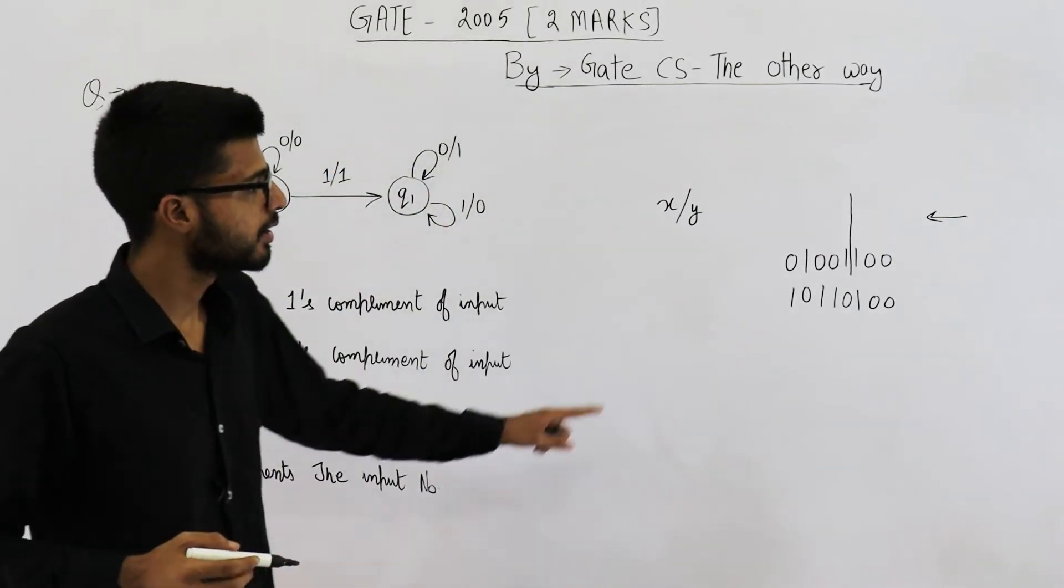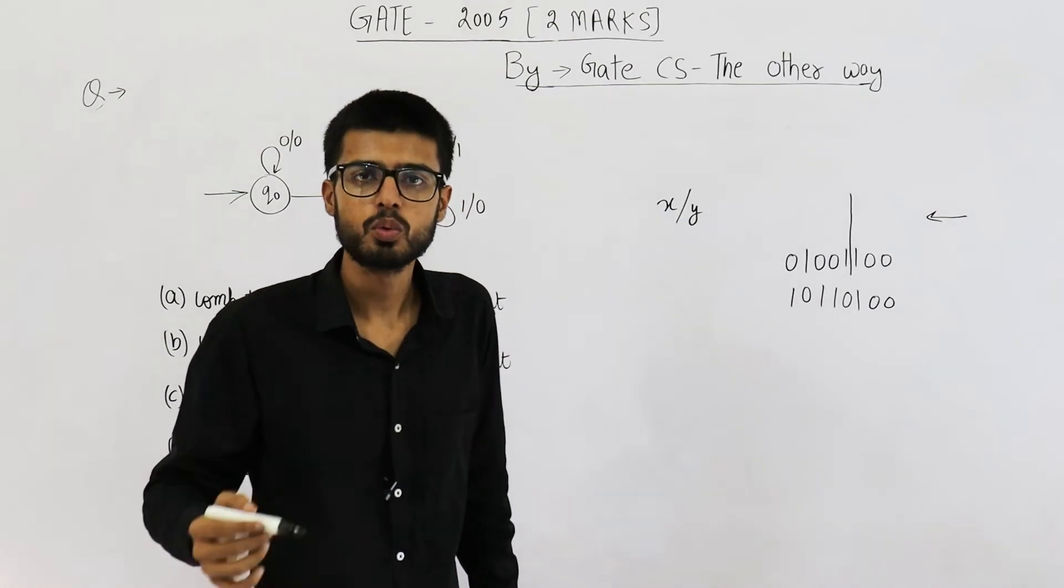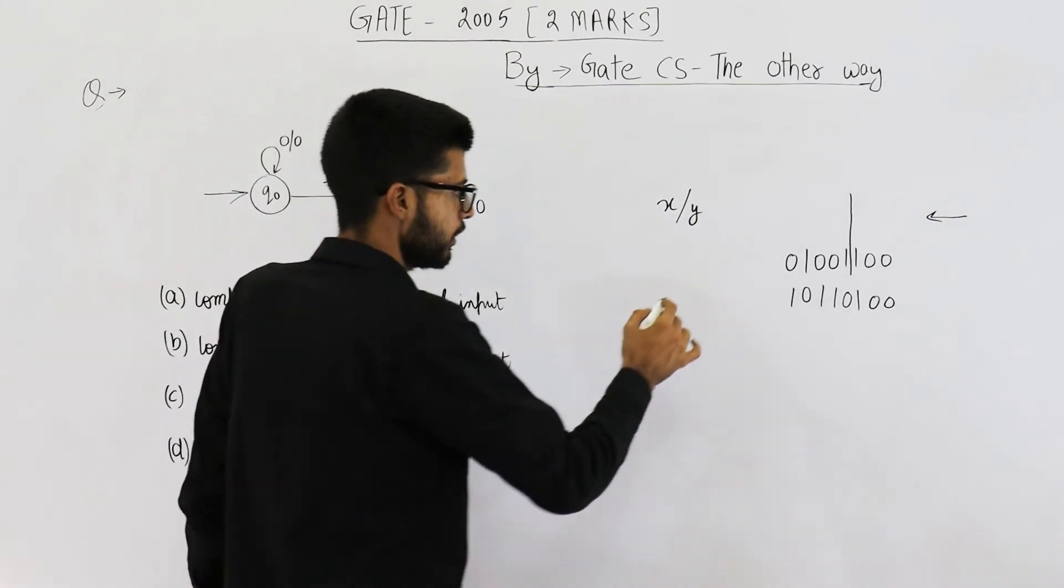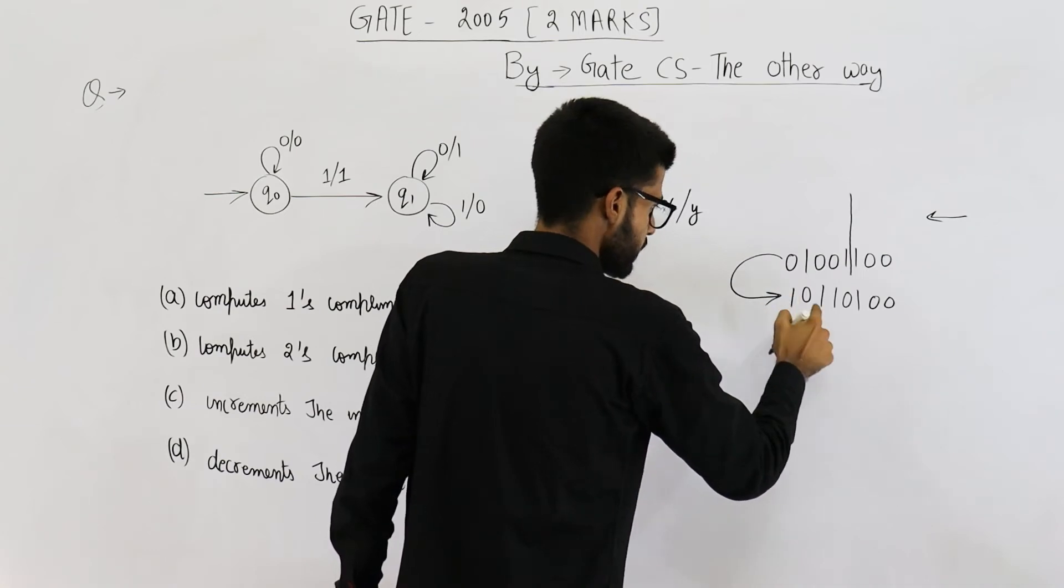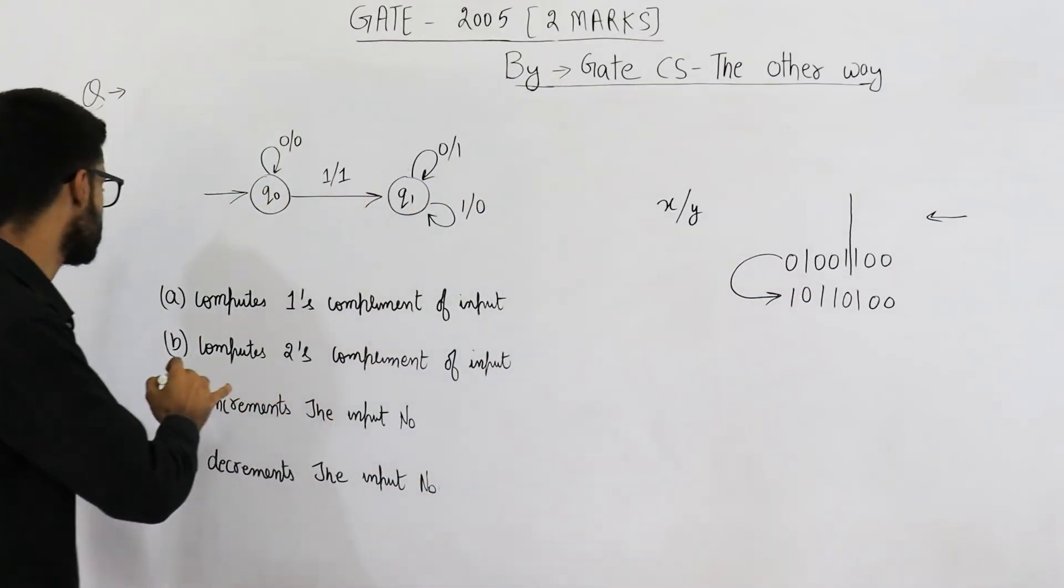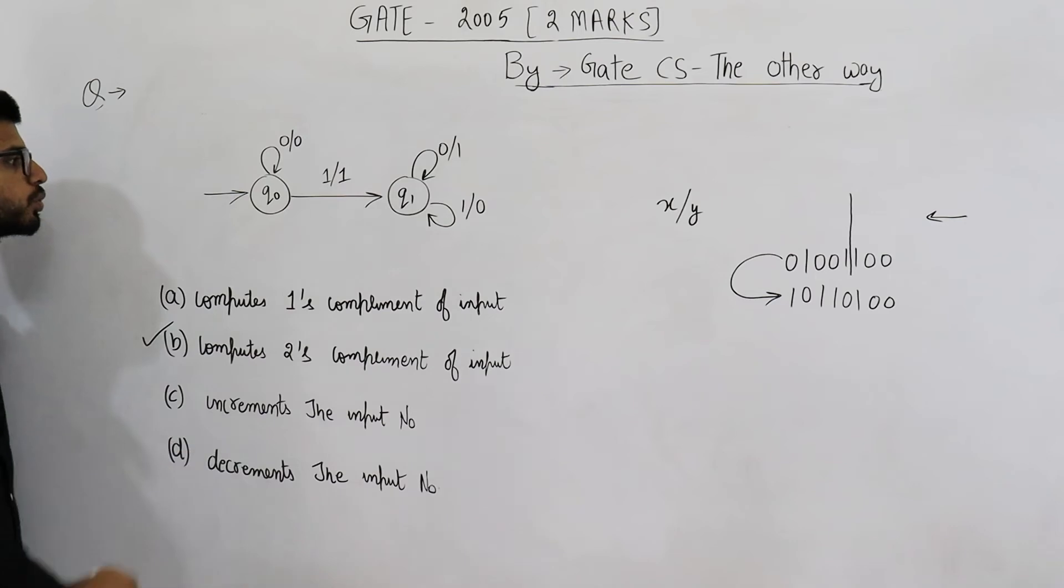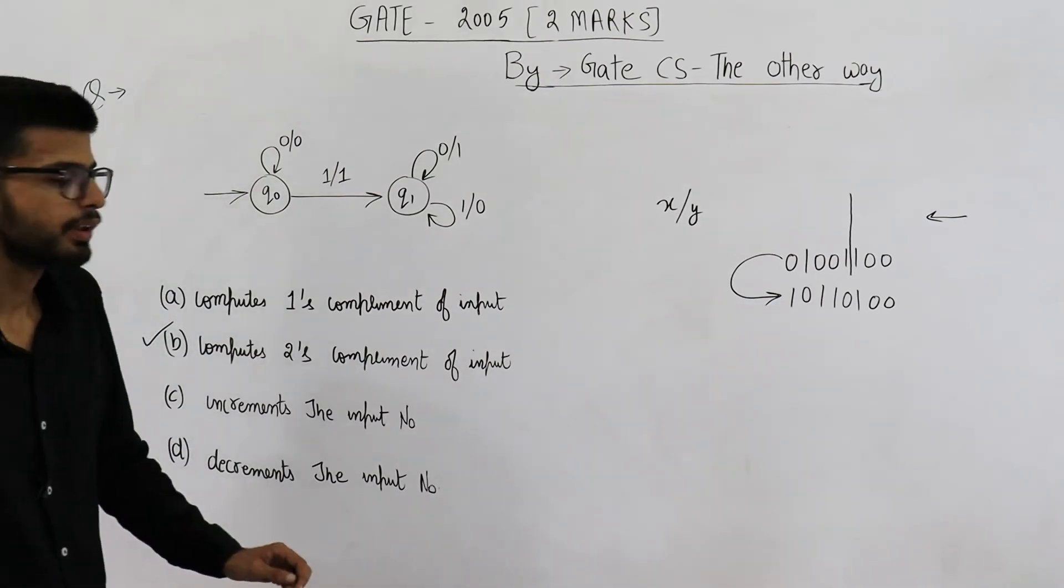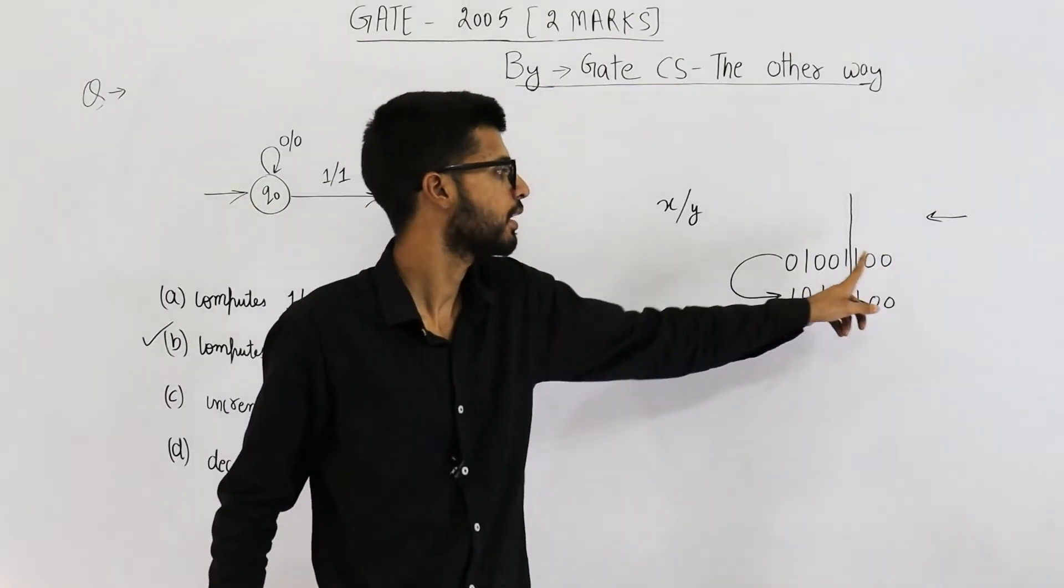You very well know, this is a shortcut of finding 2's complement of any number. This number's 2's complement is this. So your answer is, this machine computes 2's complement of a number. The thing is, input is given from this side to this side.